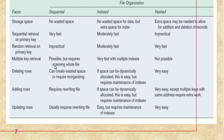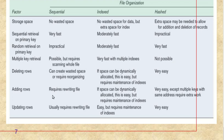For deleting rows: in sequential, deleting can create wasted space or require reorganization. In index, if space can be dynamically allocated it is easy, but requires maintenance of indexes — if you delete one row you must update all subsequent indexes. In hash, deleting a row does not affect the hashing algorithm and is very easy.